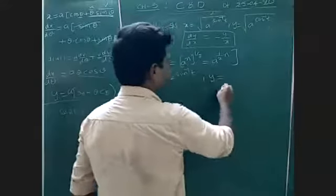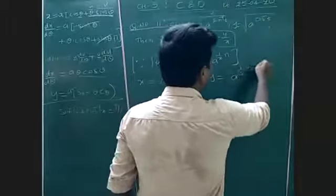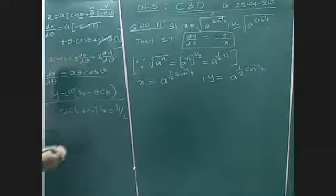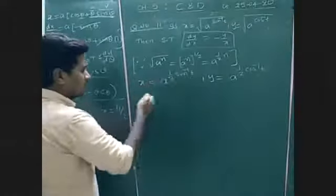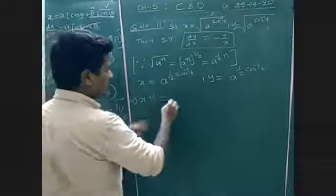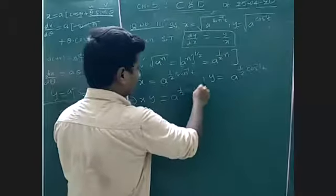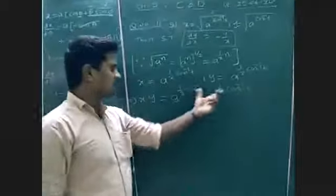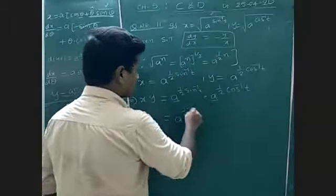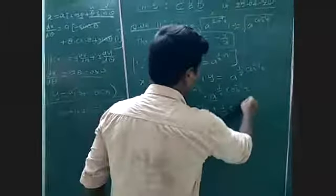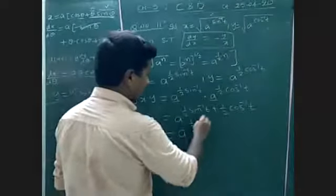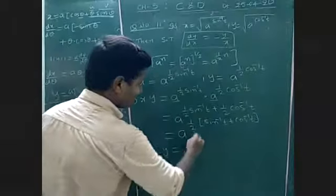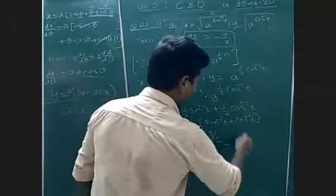Here we have the formula sin inverse x plus cos inverse x = π/2. Now we can change the given function into this form. Multiply both x and y: x·y = a^(½ sin⁻¹t) × a^(½ cos⁻¹t). We can add the powers: a^(½ sin⁻¹t + ½ cos⁻¹t) = a^(½ · π/2) = a^(π/4).